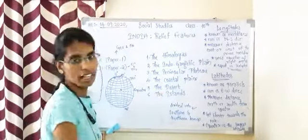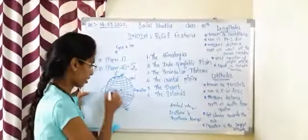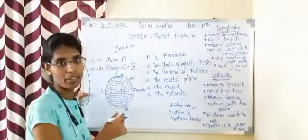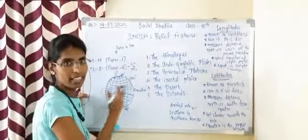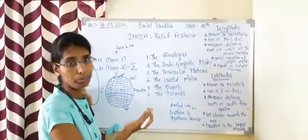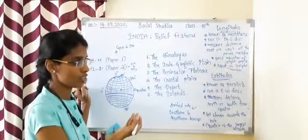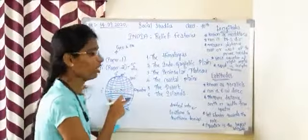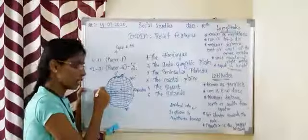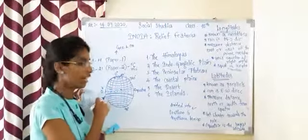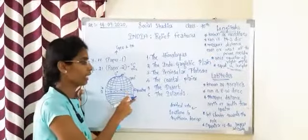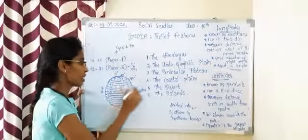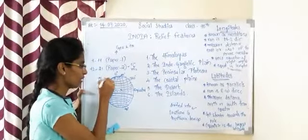Latitudes are known as parallels. They run in the east-west direction — they are horizontal lines. They measure the distance north or south from the equator. The dotted line on the globe is the equator, which is at 0 degree latitude. The equator is at 0 degrees; the upper portion is the north and the lower portion is the south. These two portions are called the northern hemisphere and the southern hemisphere.